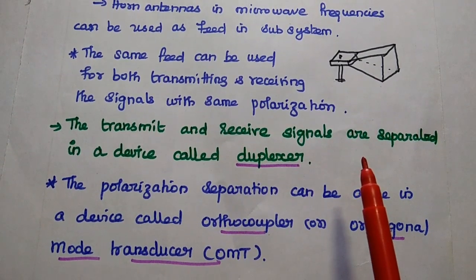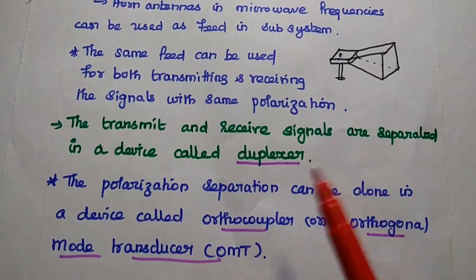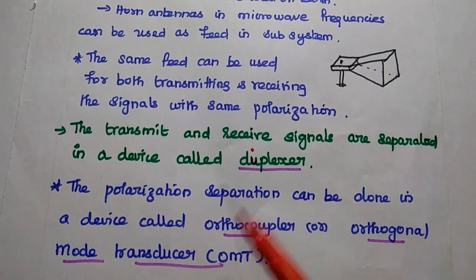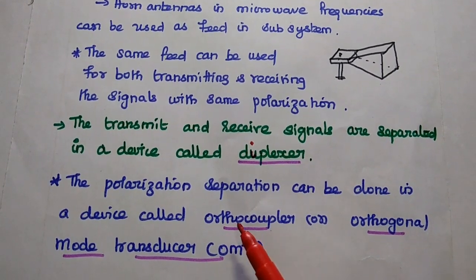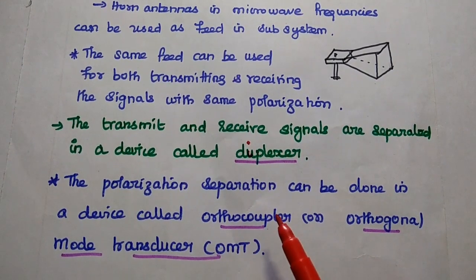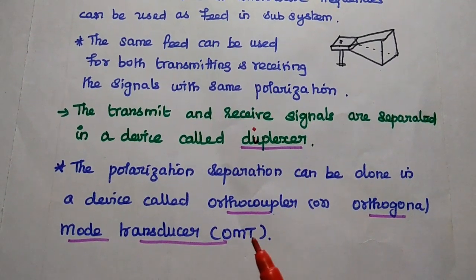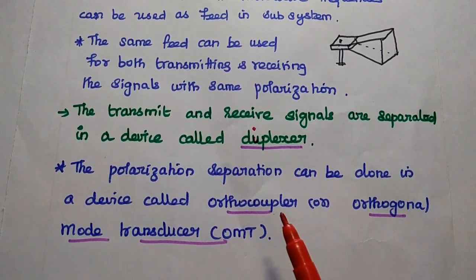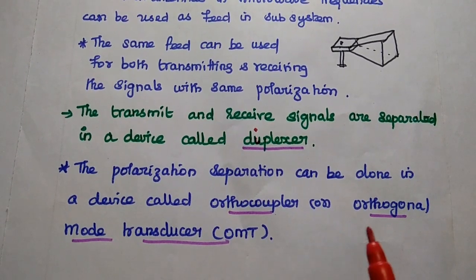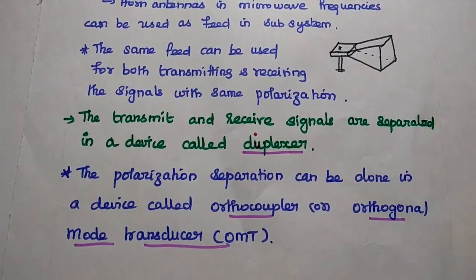The transmit and receive signals are separated in a device called a diplexor. A polarization discriminator is also used to separate the transmitted and received signals in the antenna system. Polarization separation can also be done in a device called an orthocoupler, or orthogonal mode transducer — simply called OMT.